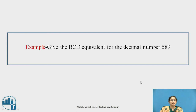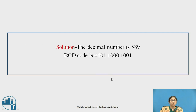Example: Give the BCD equivalent for decimal number 589. Solution: The decimal number is 589. The BCD code is represented as follows — for each decimal digit, there are 4 bits.